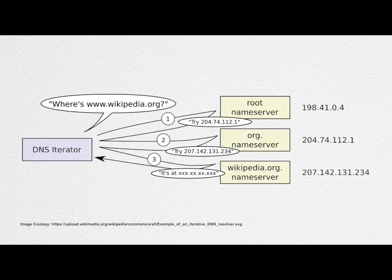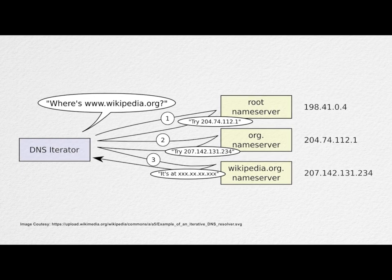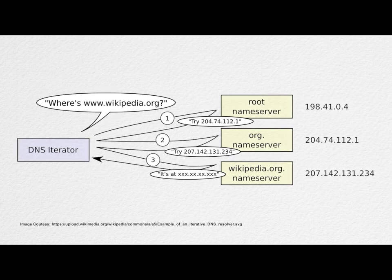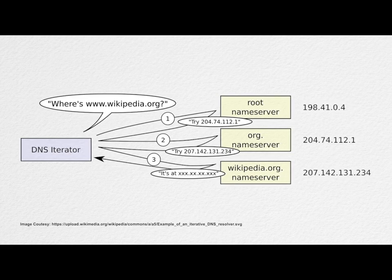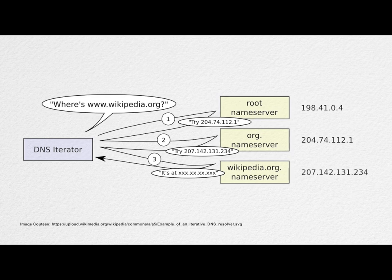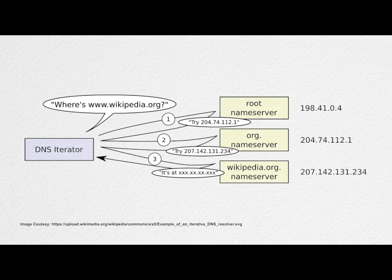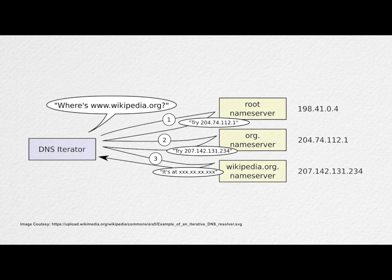Intermediate servers keep a record of this IP address in their DNS cache so that if the same request is encountered again, they don't have to go through this process again. If the same URL is requested again, the DNS cache of the local host computer will return the IP address of the URL.